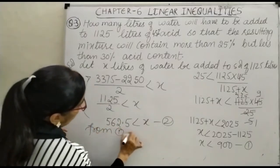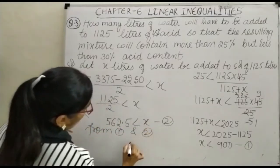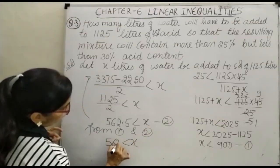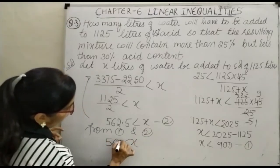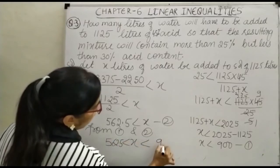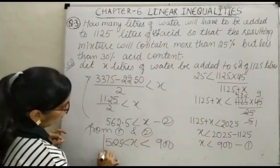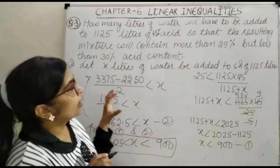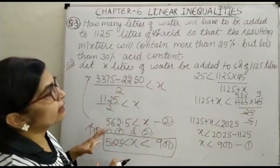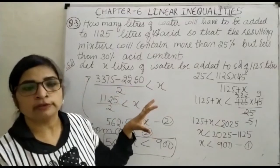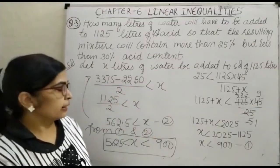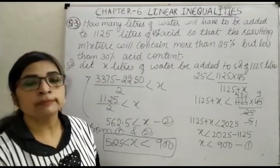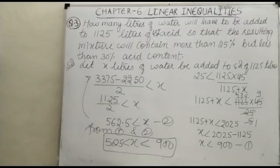So from both inequalities, x is greater than 562.5 and less than 900. This is how the questions related with acid solution and concentration are worked out with the given conditions. That is all about the word problems. Thank you.